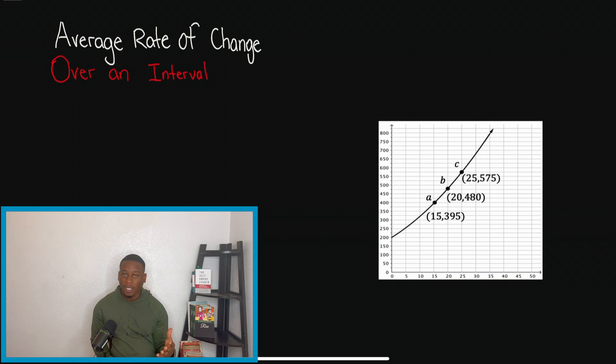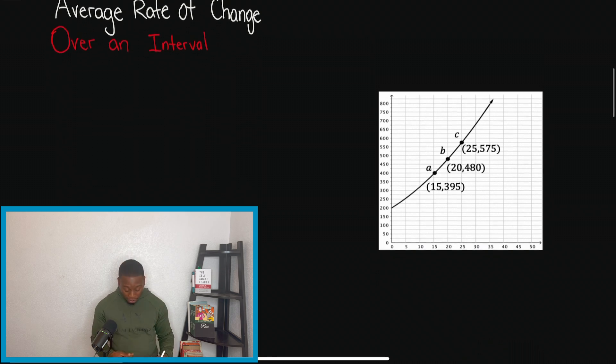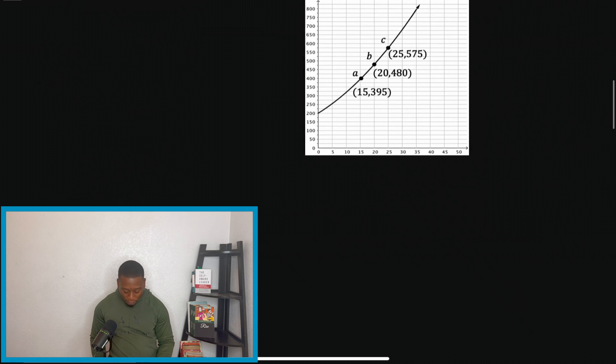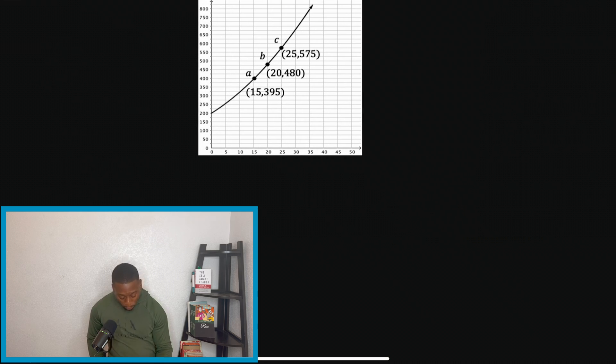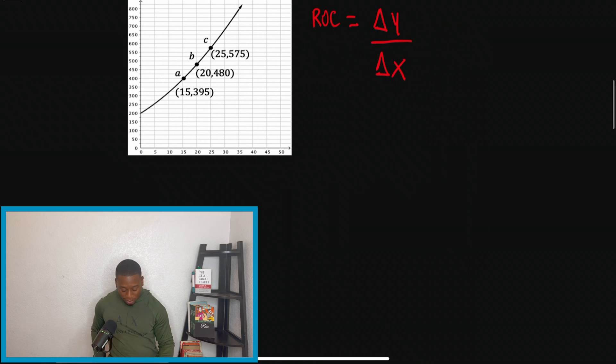I'm going to explain what that is and how to solve. So when we're talking about average rate of change over interval, we're going to probably see this as ROC and just understand that that is rate of change and that is the change in Y divided by the change in X. And for me, I like to simplify this and just tell my students that we're basically going to be finding slope, right? We're going to be using that slope formula.